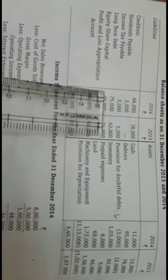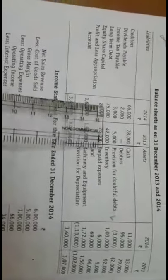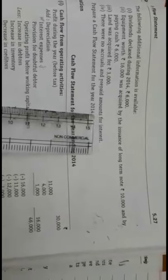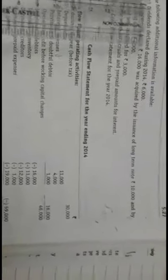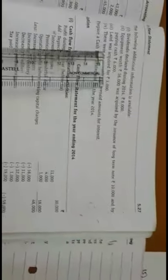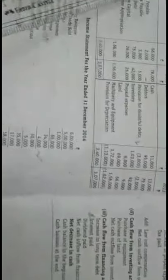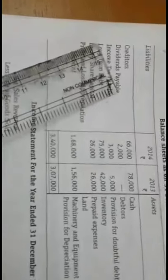Under long-term debt, the amounts of Rs. 75,000 and Rs. 42,000 — the difference includes Rs. 16,000. Land was acquired for Rs. 3,000. There were no accruals or prepaid accounts for interest. According to these adjustments, we need to prepare the equipment account, long-term debt account, income tax payable account, and dividend payable account.